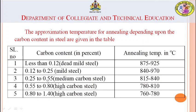All temperatures are in degrees Celsius. For 0.55 to 0.80% carbon (high carbon steel), the annealing temperature range is 780 to 810°C. For 0.80 to 1.40% carbon (high carbon steel), the range is 760 to 780°C. The annealing temperature range varies depending upon the carbon content or the type of steel being used.